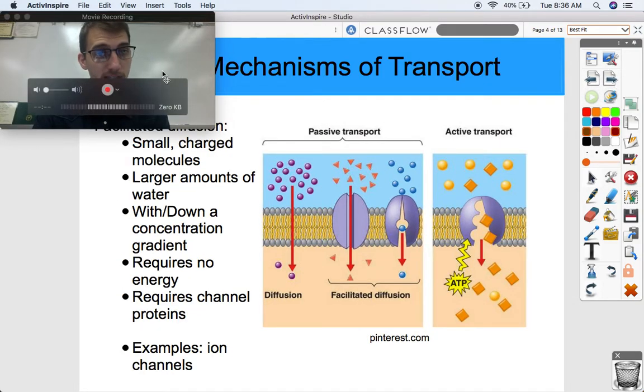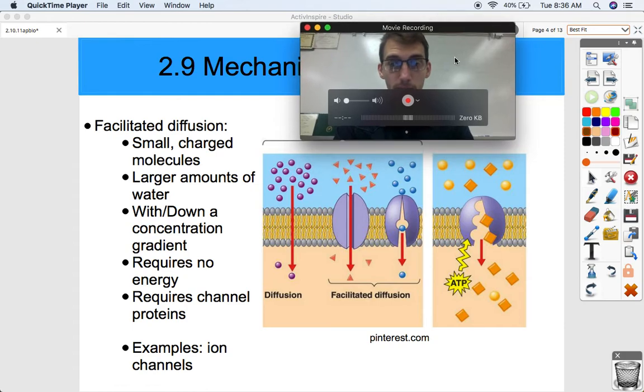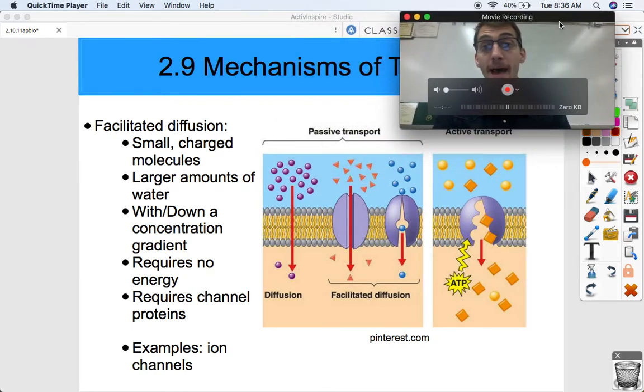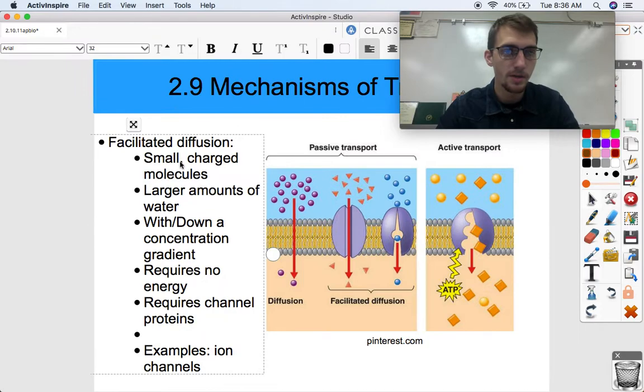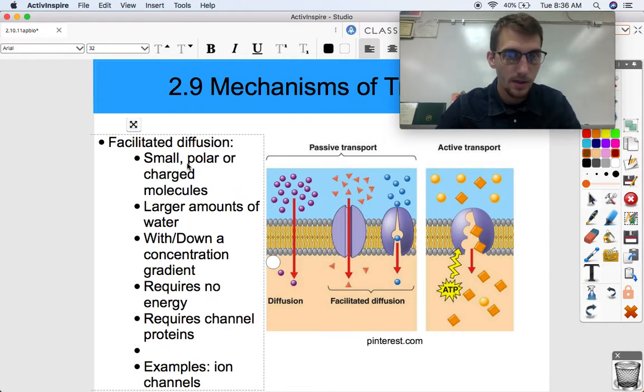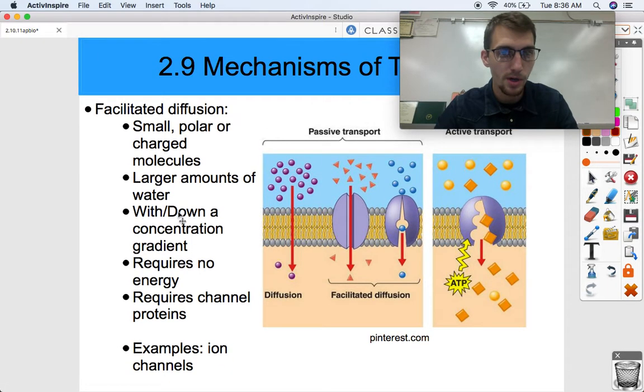Facilitated diffusion is very similar. According to this diagram, it's also a form of passive transport. What needs to be passed through by facilitated diffusion is small charged molecules or polar molecules—small polar or charged molecules.